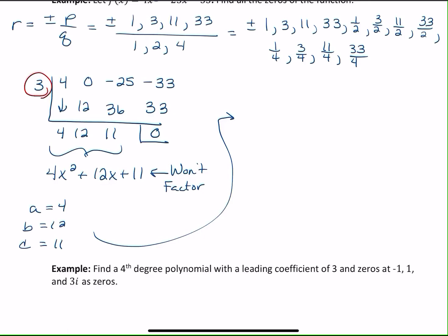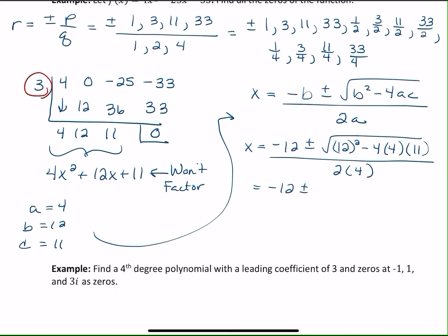So I'm going to have to go ahead and rewrite it if you have trouble with the quadratic formula. Negative b plus or minus the square root of b squared minus 4ac all over 2a. So just plug and chug. I'm going to have a negative 12 plus or minus the square root of 12 squared minus 4 times 4 times 11 all over 2 times 4. Ends up with negative 12 plus or minus 144 minus 176 over 8.